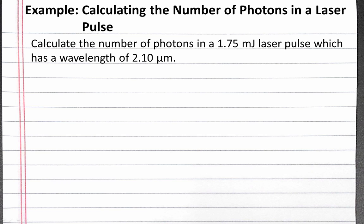In this example problem, we calculate the number of photons in a laser pulse. Our problem reads: calculate the number of photons in a 1.75 millijoule laser pulse which has a wavelength of 2.1 micrometers.